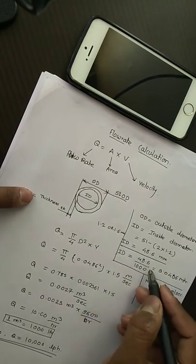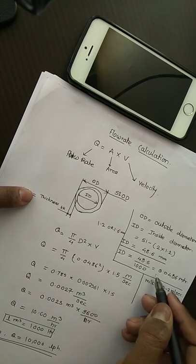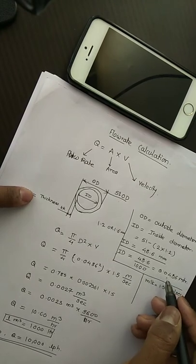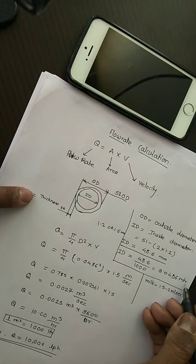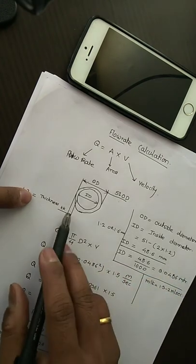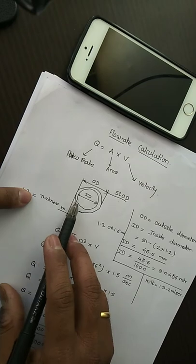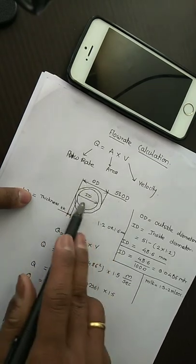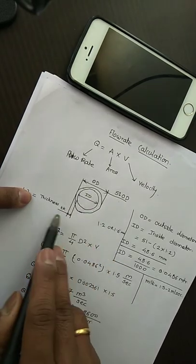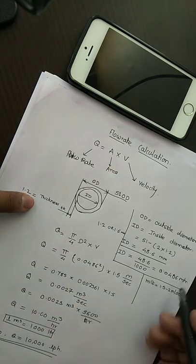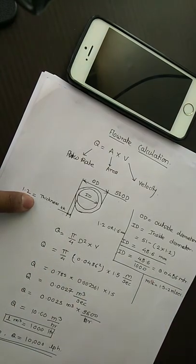I will show you the drawing. Here is the outer diameter, here is the inside diameter, and here is the thickness which we subtract from the outer diameter. We will put all these values in our formula.